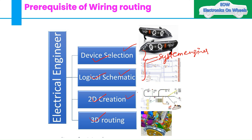The third role is 2D creation. Sometimes system engineers take care of this, but sometimes they don't. Other people in the team take care of 2D creation, or the person doing 3D routing handles it himself. These roles can be interchangeable, but you have to understand what electrical engineers can do in wiring harness.